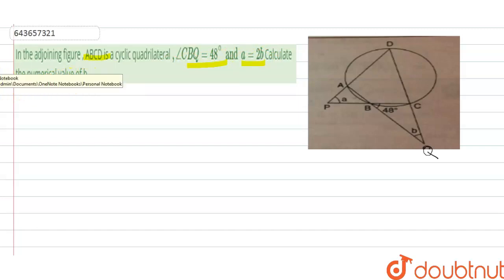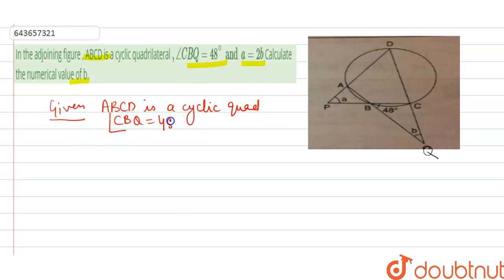How to find the numerical value of B? First of all, we have A, B, C, D as your cyclic quadrilateral. Here, angle CBQ is 48 degrees and A equals 2B. Given: ABCD is a cyclic quadrilateral, angle CBQ is 48 degrees, A equals 2B.